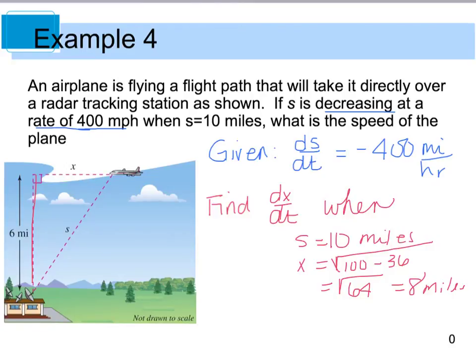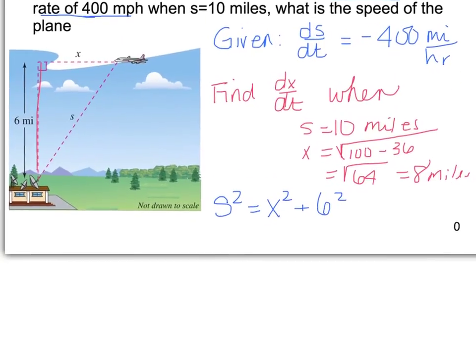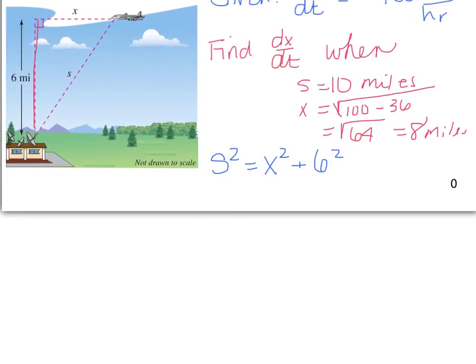So now I need to come up with an equation that's going to relate my s and my x and the y, which is your 6 miles. So again, using Pythagorean theorem, I know that s squared is equal to x squared plus 6 squared. So if I go ahead and differentiate that, we're going to get 2s ds/dt is equal to 2x dx/dt plus 0.